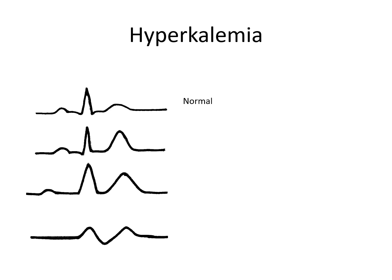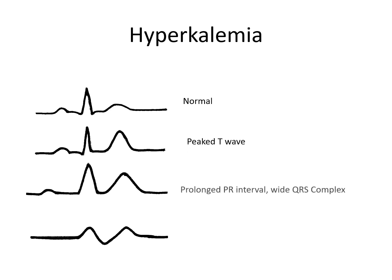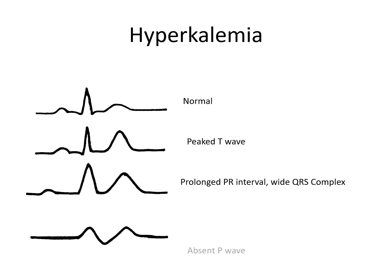Hyperkalemia on ECG can show tall, peaked T waves, prolonged PR interval, wide QRS complexes, and loss of P waves.